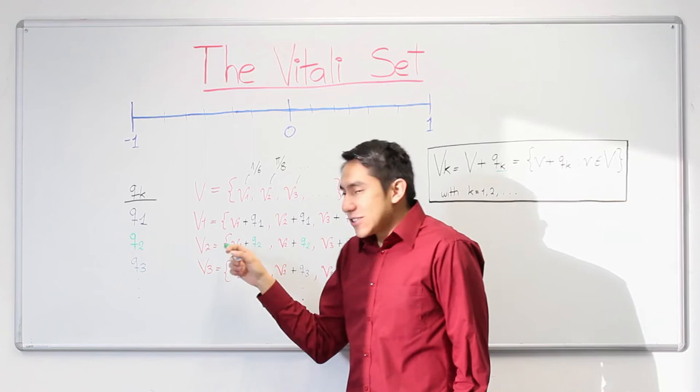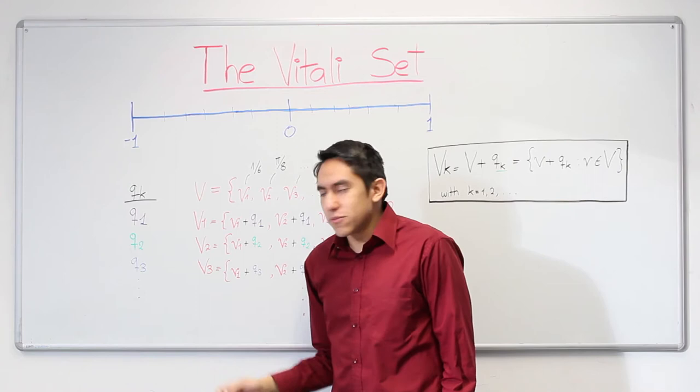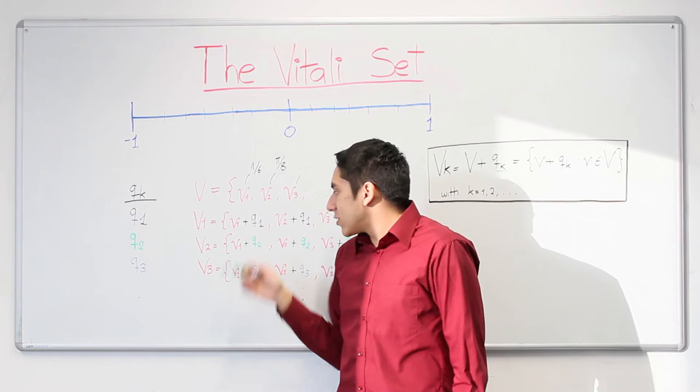For the second set, V_2, we just do the same, but this time we use the second term, Q_2, so V_1 plus Q_2, and so on. And so, we do the same with the rest terms of the rational numbers.